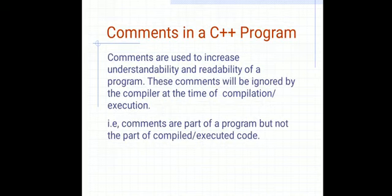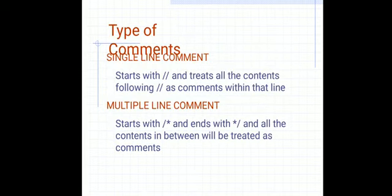Comments are very useful. When we write a program, if someone else is using it, a programmer must give a comment explaining what a particular statement does. There are two types of comments in C++: single line comments and multiple line comments. A single line comment starts with a double backslash. A multiple line comment starts with a forward slash followed by a star, and ends with a star followed by a forward slash.